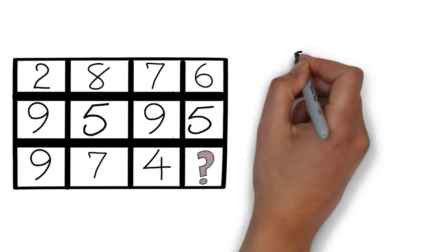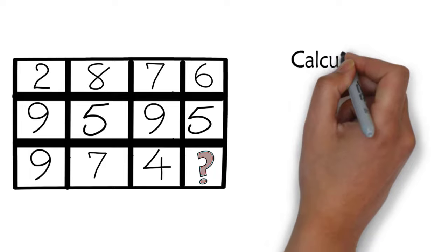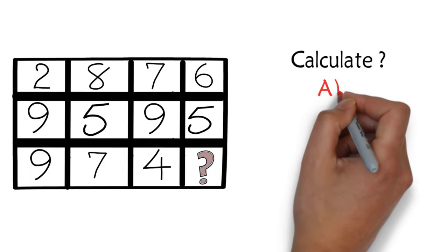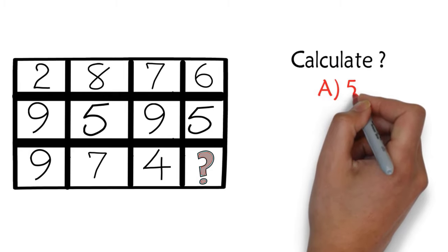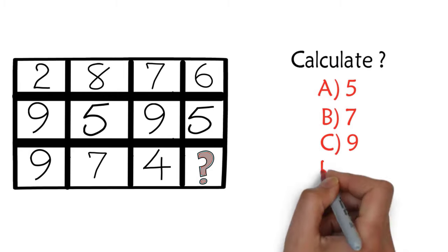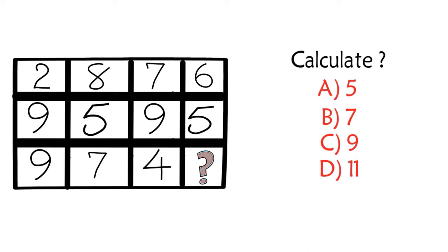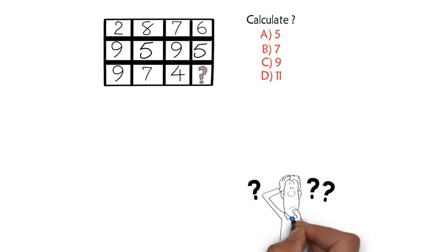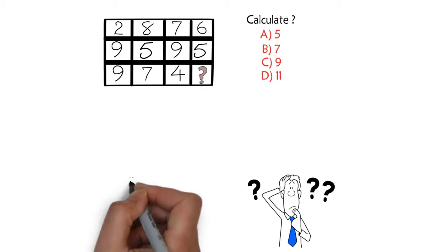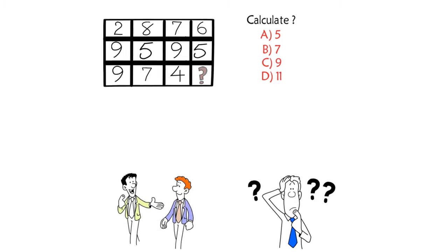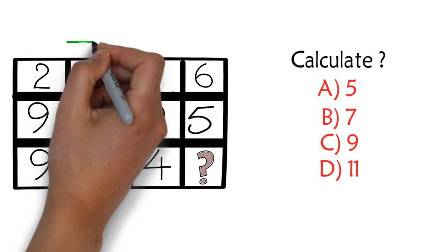You can choose from one of four different choices: choice A is 5, choice B is 7, choice C is 9, and choice D is 11. Give yourself 5 to 10 seconds — this is about as much time as you will get on the test. Let's continue to see how we can get to the correct answer together.